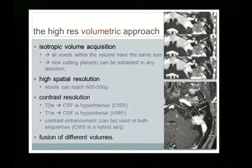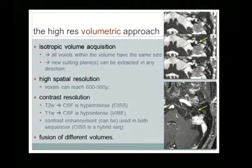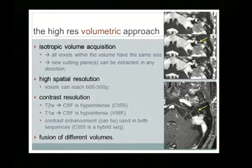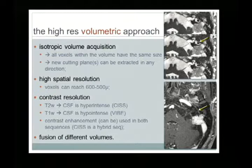The concept is the high-resolution volumetric approach: isotropic volume acquisition, meaning all voxels within the volume have the same size, like CT. We can cut in different planes and extract anatomy in any direction. Resolution can reach 500–600 microns. This consistent resolution is mostly related to T2-weighted sequences where CSF is hyperintense, or T1 where CSF is hypointense.